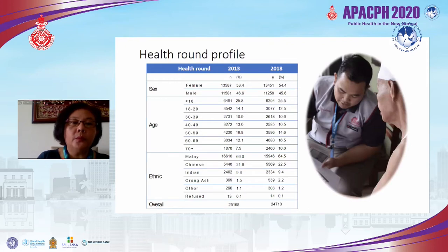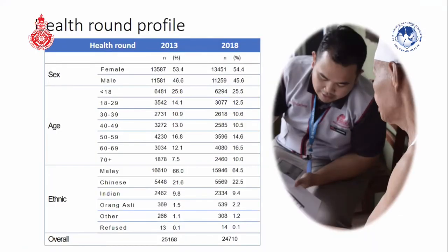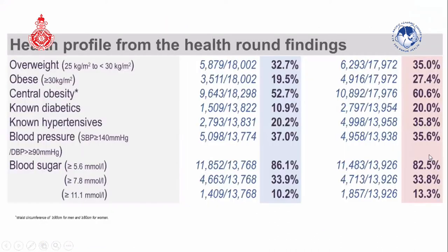Looking at the health round profile, it is broadly similar to the Malaysian population profile, though with a slightly older age group. When comparing the 2013 and 2018 health rounds, overweight, obesity, and central obesity all increased. Known diabetes and known hypertension also increased — but this is actually a positive finding, because it's better to be known than unknown. Blood pressure and blood sugar appear to be somewhat more under control, though the blood glucose data is limited as we used random rather than fasting blood glucose, and did not measure HbA1c.